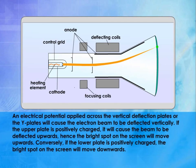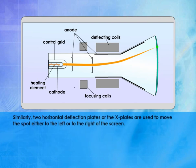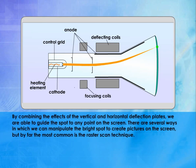An electrical potential applied across the vertical deflection plates, or Y plates, will cause the electron beam to be deflected vertically. If the upper plate is positively charged, the beam deflects upwards and the bright spot moves upwards. Conversely, if the lower plate is positively charged, the bright spot moves downwards. Similarly, two horizontal deflection plates, or X plates, move the spot left or right. By combining the effects of both sets of plates, we can guide the spot to any point on the screen. The most common technique to create pictures is the raster scan technique.